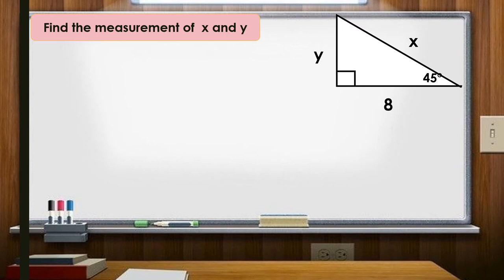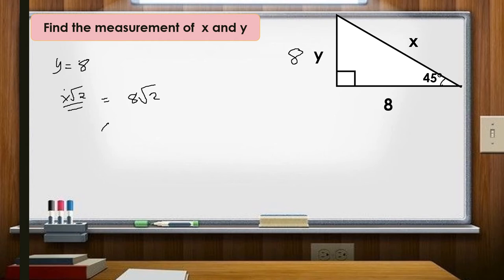Find the measurement of x and y. Since the leg is 8 and the angle is 45°, the other leg y is also 8. To find the hypotenuse x, we apply the formula: x = 8√2. Therefore x = 8√2 units.